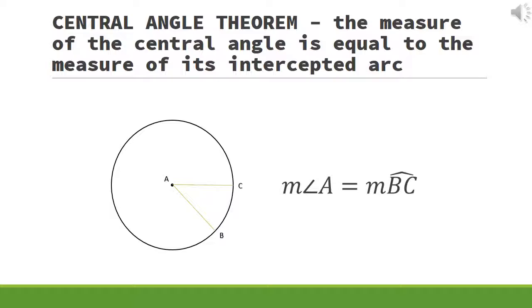The next theorem is the central angle theorem. The measure of the central angle is equal to the measure of its intercepted arc. In the figure below, the measure of angle A is equal to the measure of arc BAC.